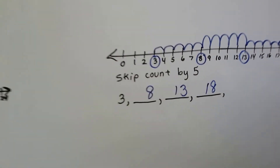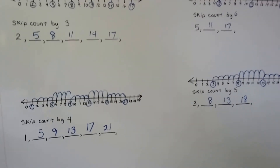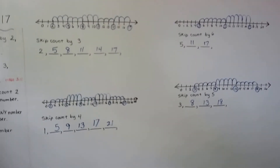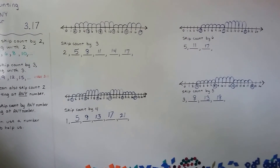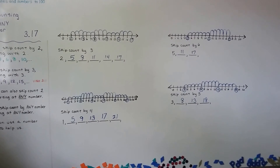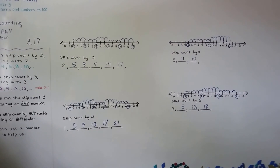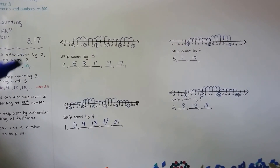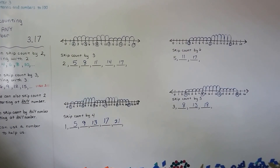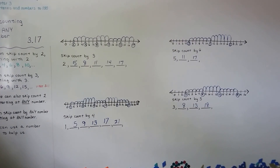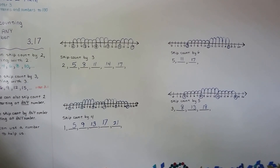So we can skip count by any number, starting with any number, and use a number line to help us. You could even use a hundred board, couldn't you? We normally skip count starting with the number we're skip counting by, but we could do it with any number. I'll see you next video — we're going to talk about money in chapter four. Bye.